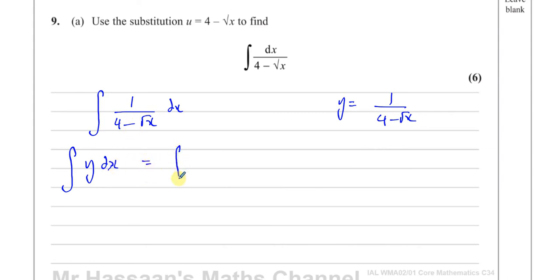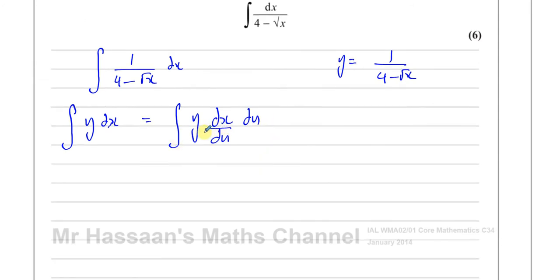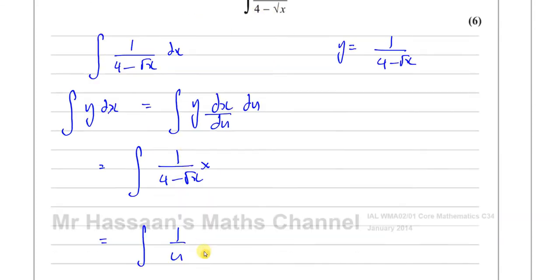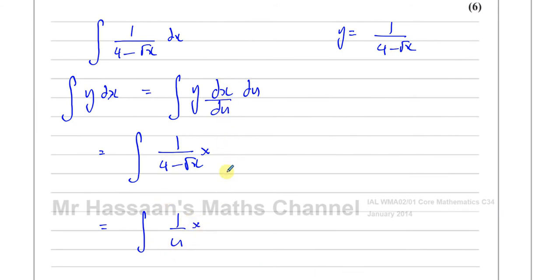With substitution, I really like to write it as the integral of y times dx/du, whatever letter we use — so it's du. Then I'm going to try to replace the y and dx/du with things in terms of u only. The y part is 1 over 4 minus the square root of x, and that can be replaced with 1 over u, because u equals 4 minus root x.